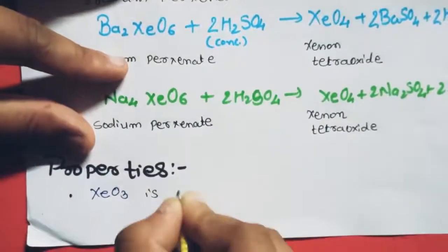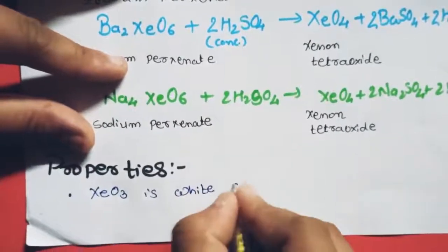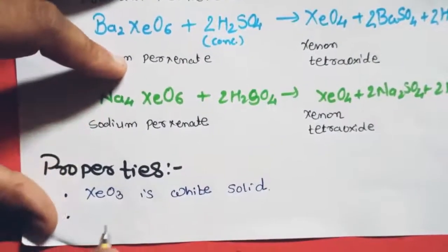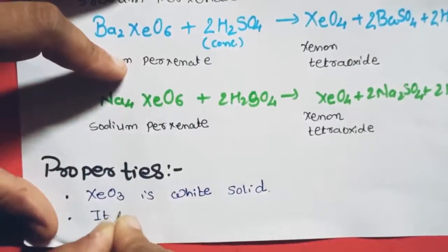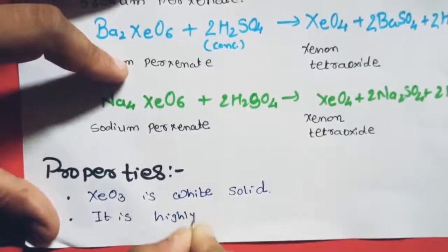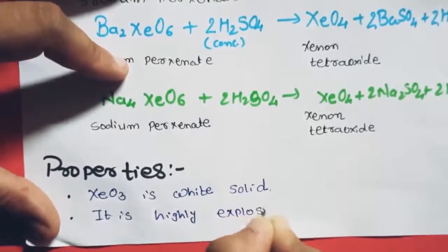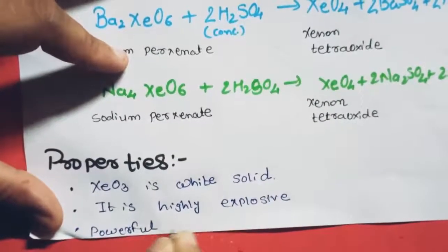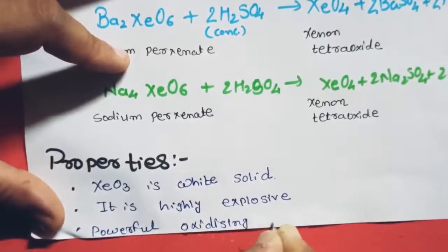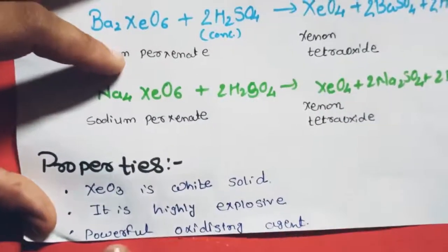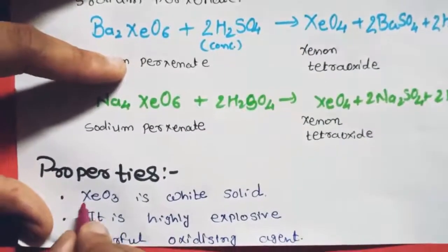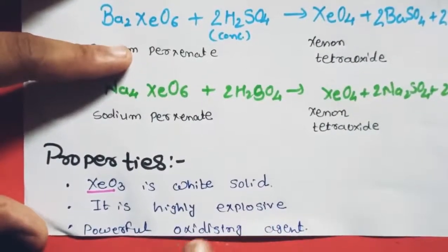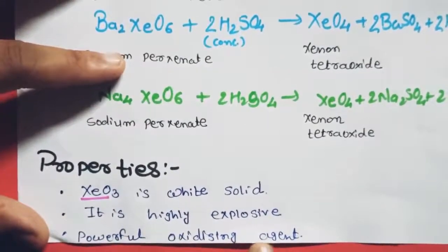Properties of XeO₃: XeO₃ is a white solid. It is highly explosive and also a powerful oxidizing agent.